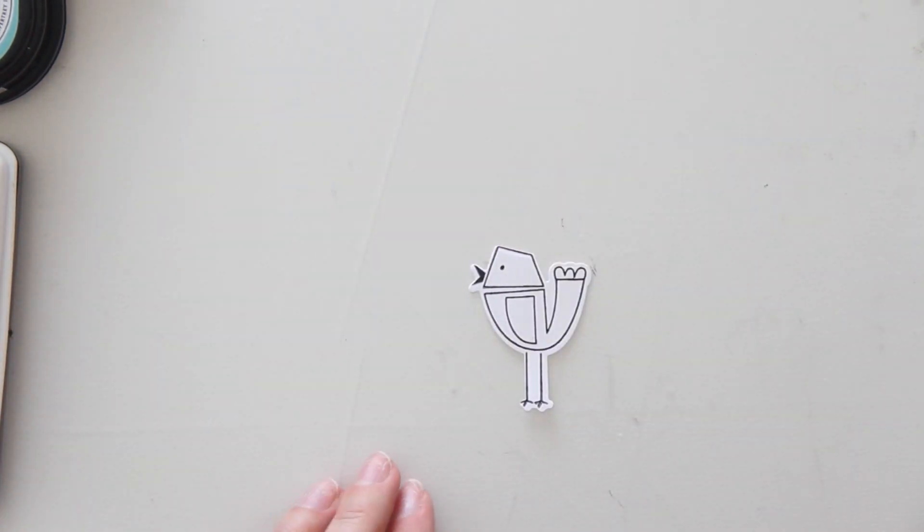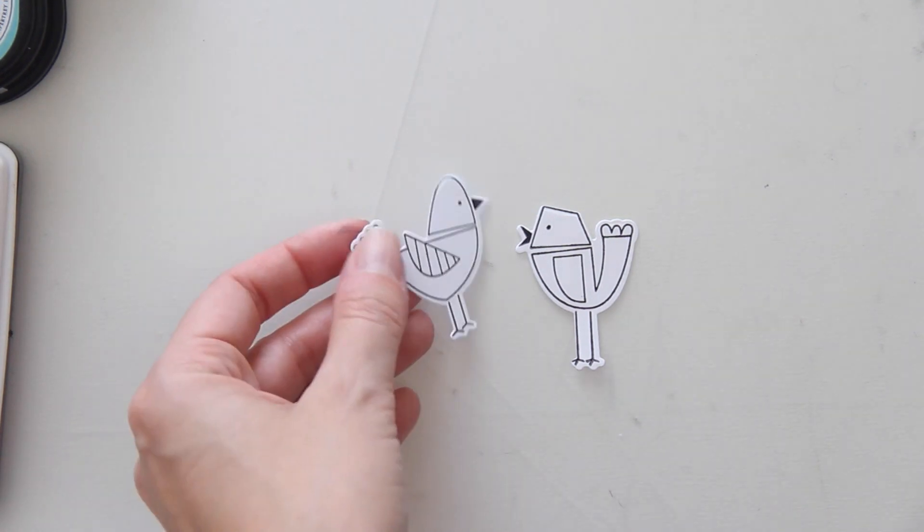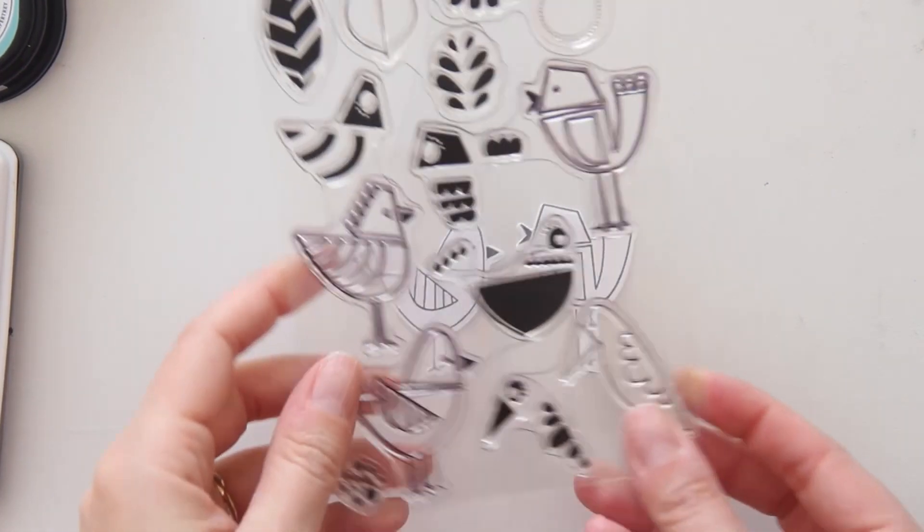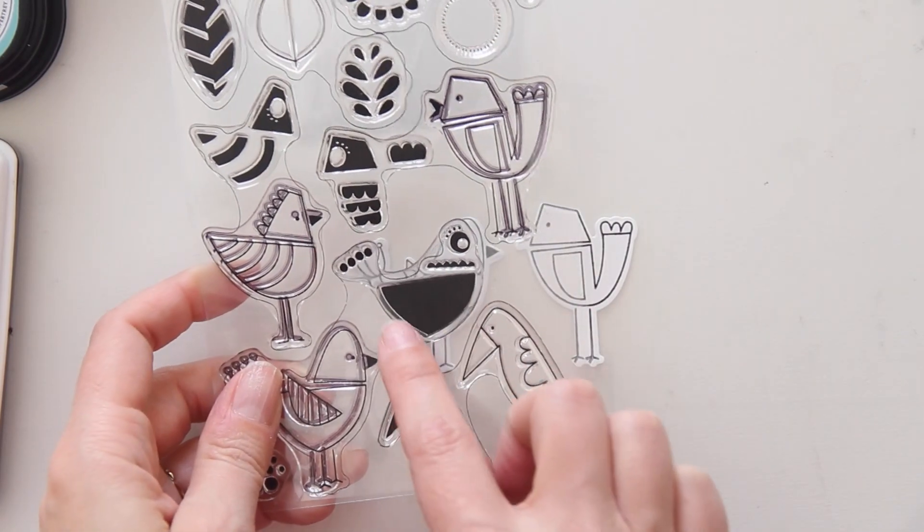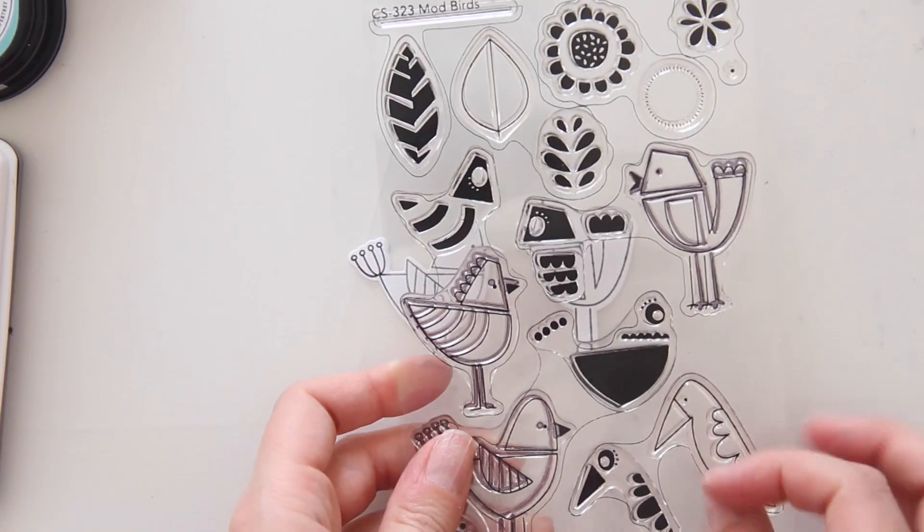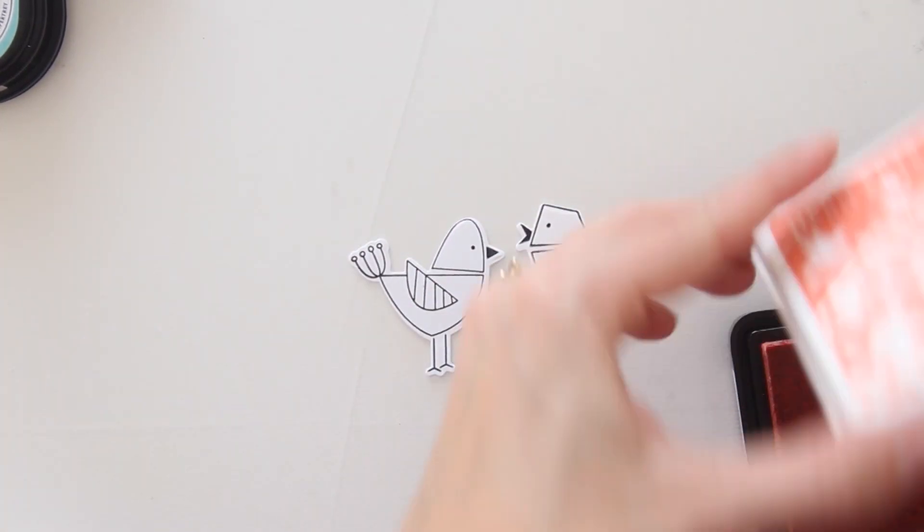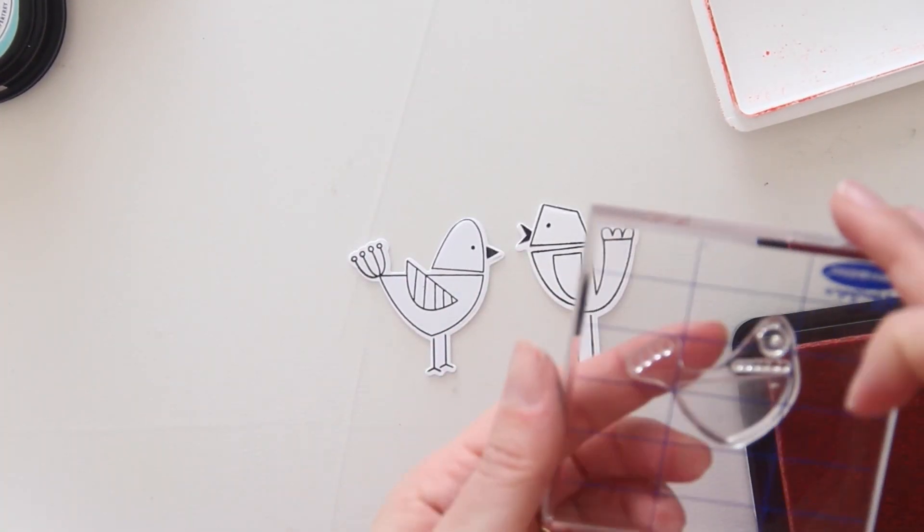Now, I'm going to stamp down the inner pieces of the birds using a variety of ink colors. What makes the stamp set so unique is that the inside pieces purposely don't align with the outlines, so it creates that fun and mod style of design that's just kind of freeform and really gives movement to the illustrations.